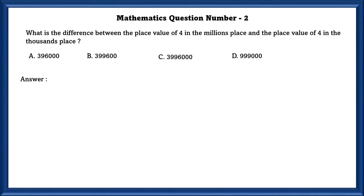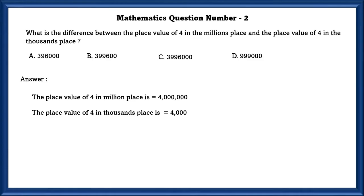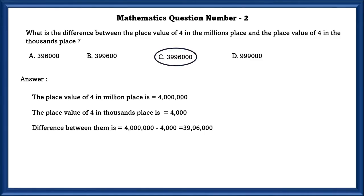Mathematics Question No. 2. What is the difference between the place value of 4 in the millions place and the place value of 4 in the thousands place? 4 in the millions place is equal to 4,000,000, and 4 in the thousands place is equal to 4,000. The difference between these two is 39,96,000.